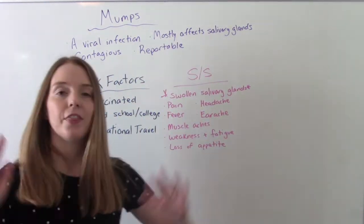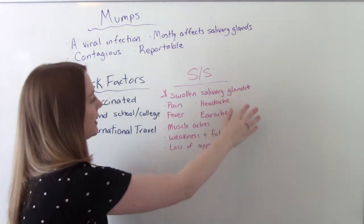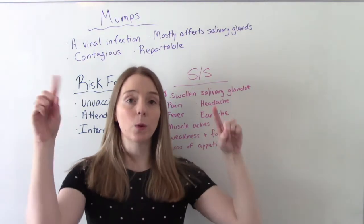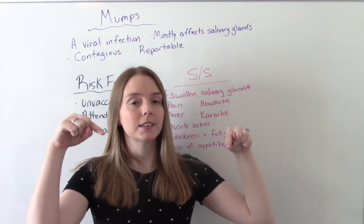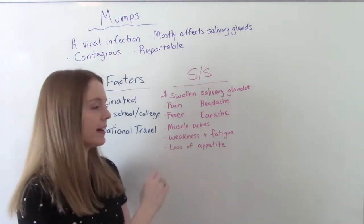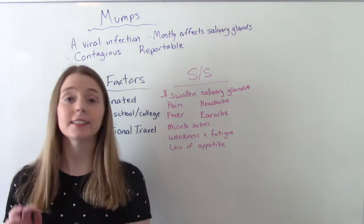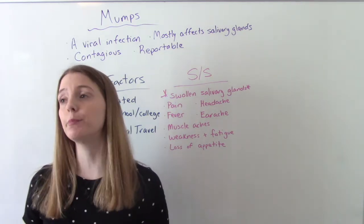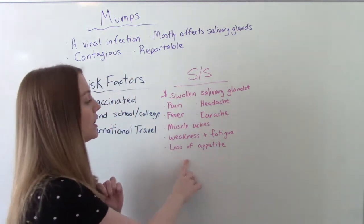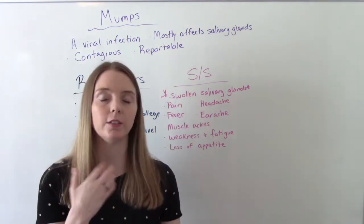What are the signs and symptoms? The big one, the classic one, is swollen salivary glands. You will see that kind of puffy appearance in their neck, and I'll go ahead and insert a picture from the CDC so you can see an example of that. Pain, especially pain with chewing and with swallowing. They can also report headaches, earaches, muscle aches. They can be tired and feel fatigued or weakened. They have fevers, and they might report a loss of appetite, which is really also more related to the pain with swallowing and chewing.